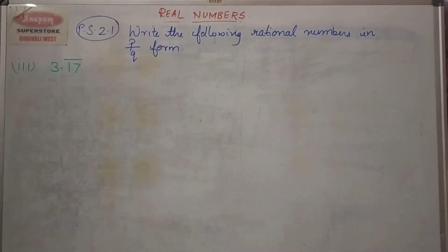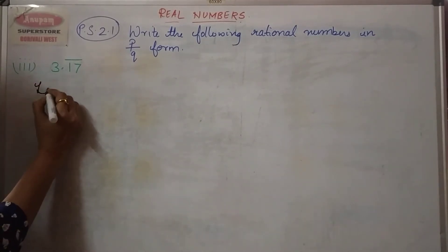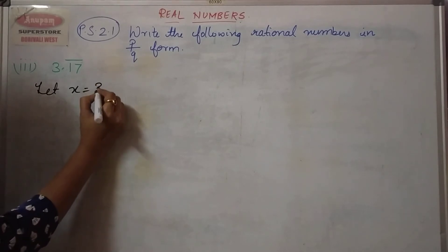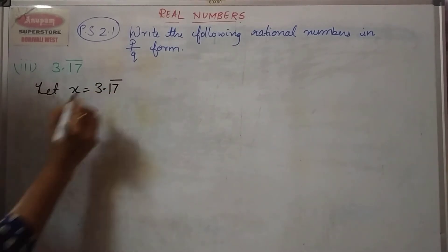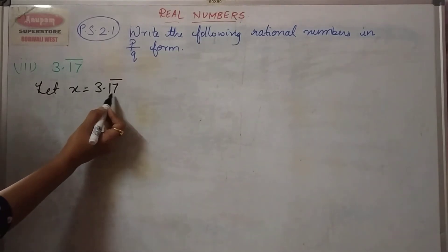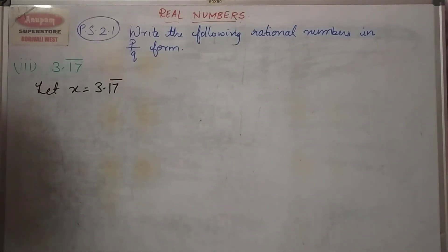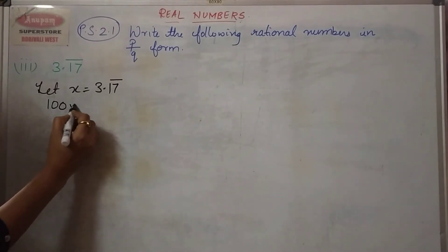The next example: 3.17 bar. As always, the first step — let x is equal to 3.17 bar. Then the next step is multiplication. Looking at the number of digits after the decimal point, it's 2, and therefore I am going to multiply by 100.